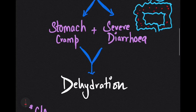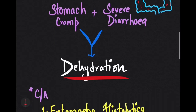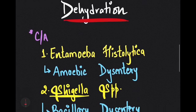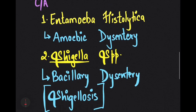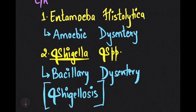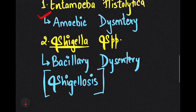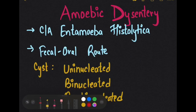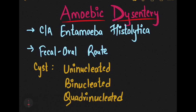The general causative agents of dysentery are Entamoeba histolytica, which causes amoebic dysentery, and Shigella species, which causes bacillary dysentery, also known as shigellosis. Moving towards amoebic dysentery, the causative agent is Entamoeba histolytica, which is spread by the feco-oral route.